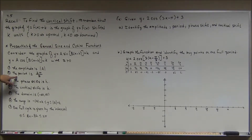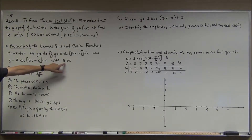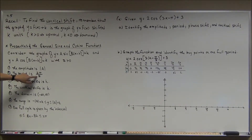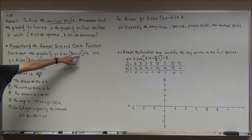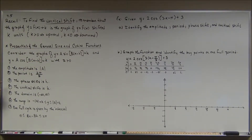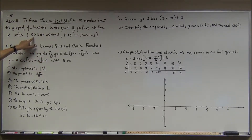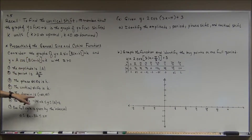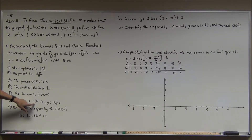The period of 2π for the parent functions is now 2π divided by b. Since b is greater than zero, we don't need absolute value. The phase shift is h units — if h is positive it goes to the right, if h is negative it goes to the left. The vertical shift is the k — the plus k on the end. K positive goes up, k negative goes down. The domain for either of these functions is the set of all real numbers.